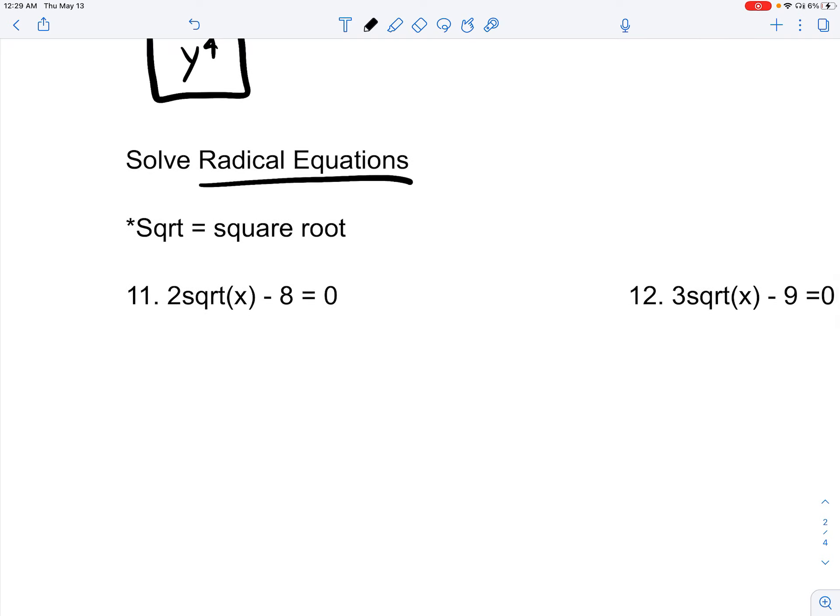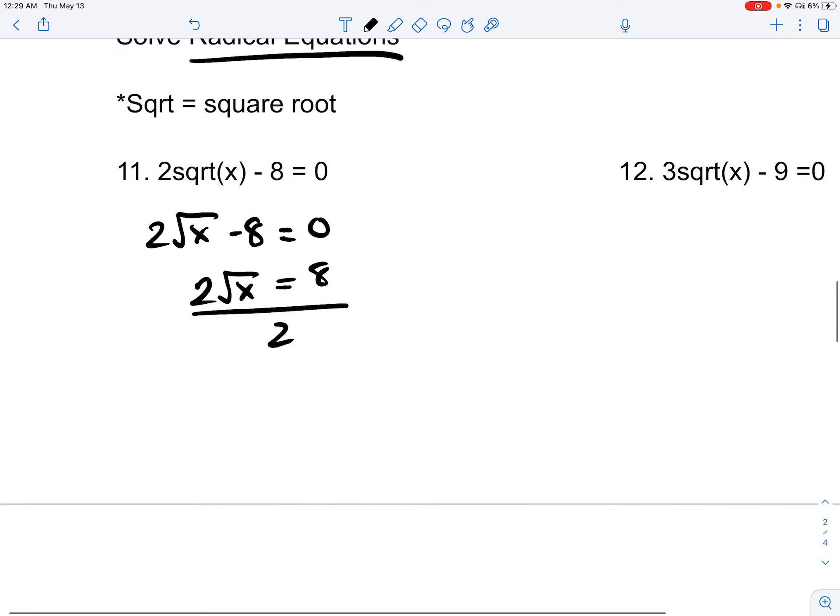Solve radical equations once more. 2 square root x minus 8 equals 0. Add 8 on both sides and you get 2 square root of x equals 8. We divide by 2 on both sides and we get square root of x equals 4. If we square both sides, we get x equals 16 and that would be our final answer.